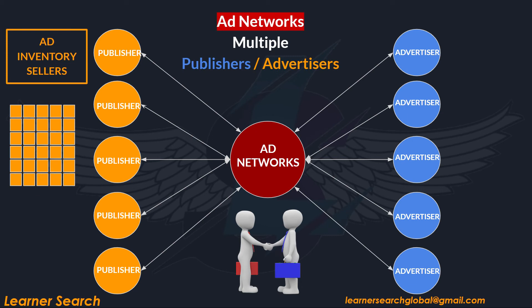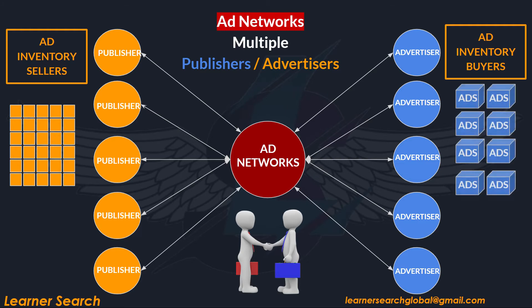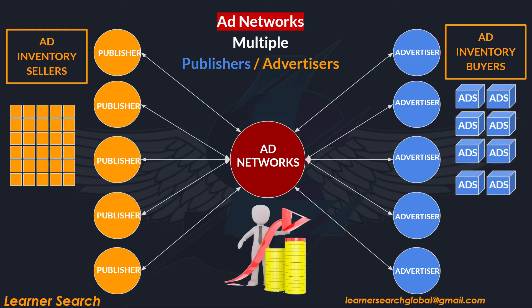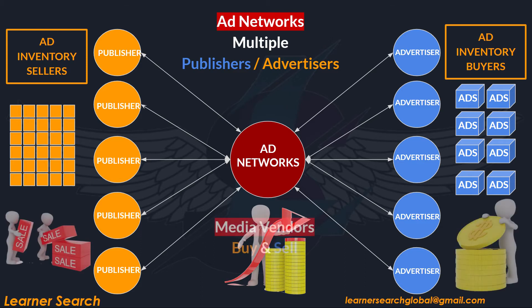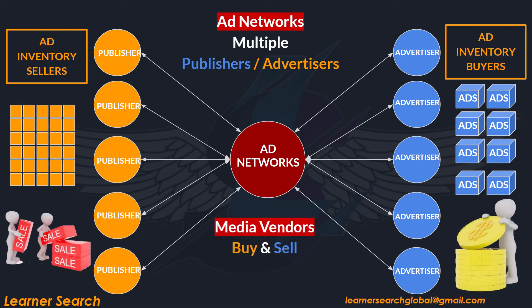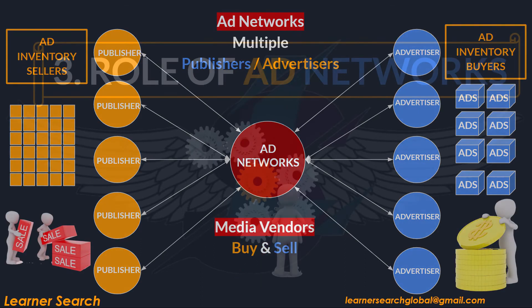Ad networks aggregate ad inventory from publishers — or ad inventory sellers — and sell it to advertisers, or ad inventory buyers, based on campaign targeting and requirements. From the buyer's end, advertisements are sent to sellers. Finally, ad networks act as media vendors who help in the selling and reselling of ad inventory.